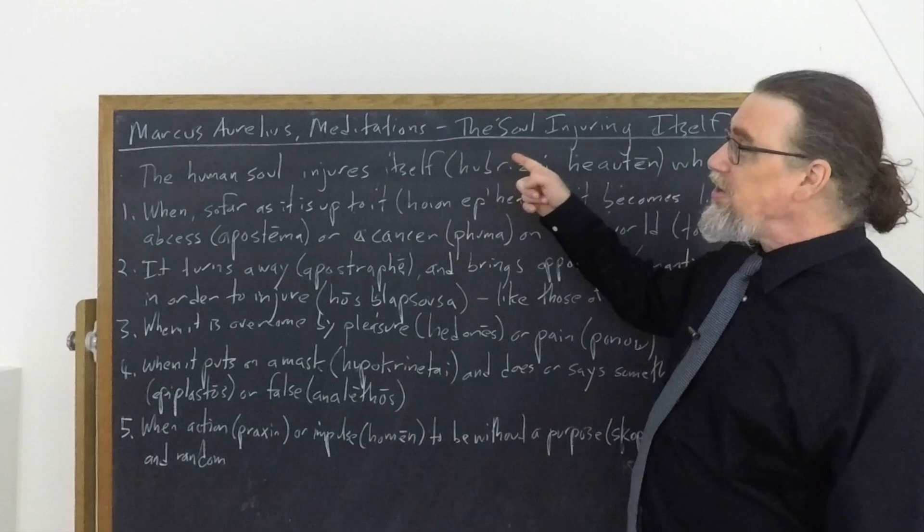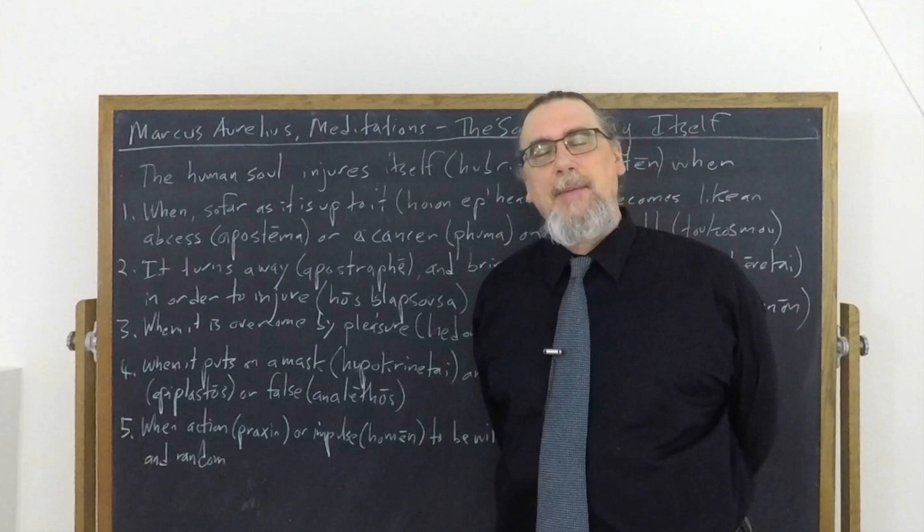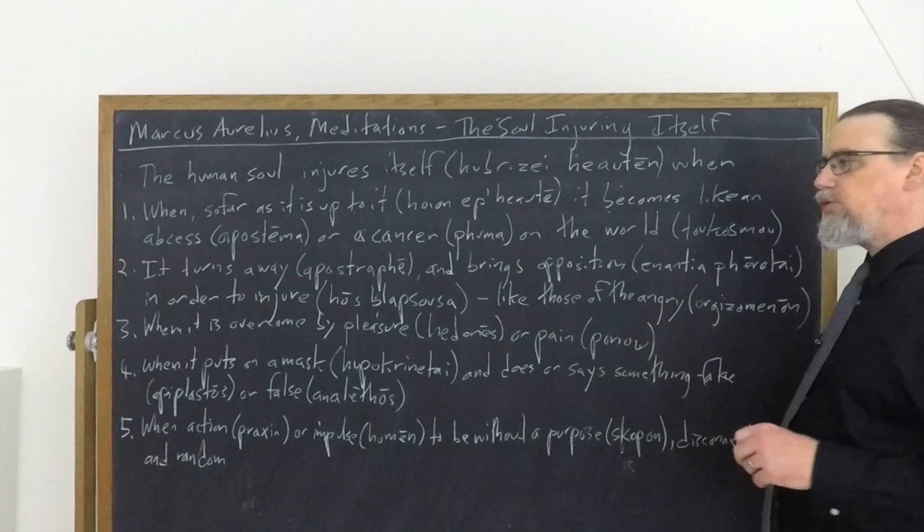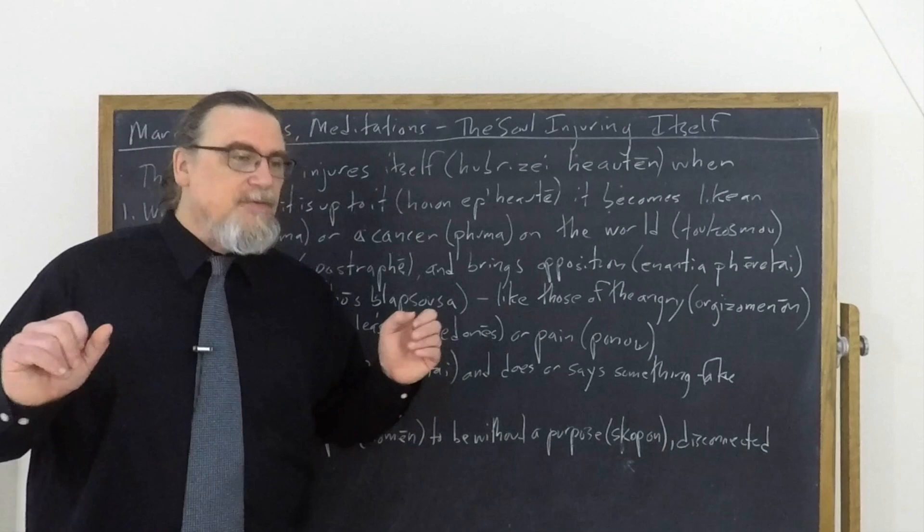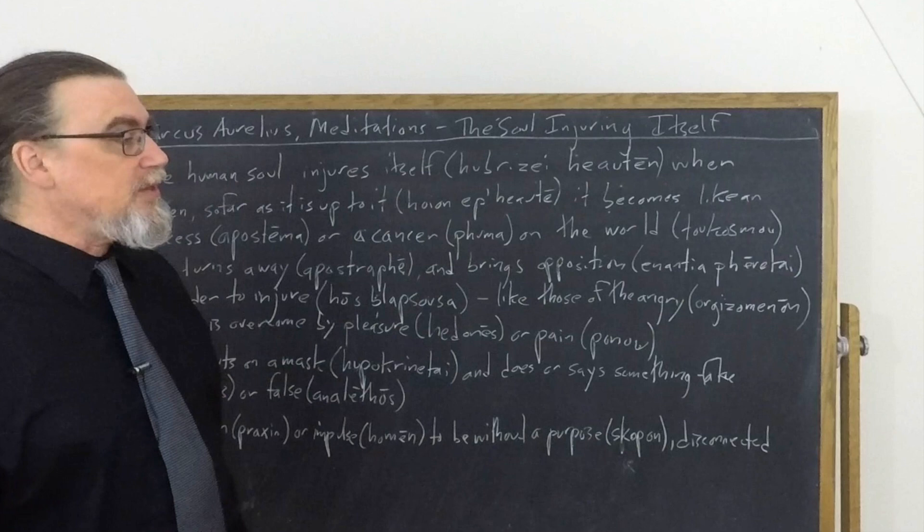The third one is relatively short: when it's overcome by pleasure or by pain. But I think it is kind of interesting to note here. So pleasure, being overcome by hedone or pain, ponos, in this case, ponu, because it's in the dative. So pleasure, hedone, that's very straightforward. There's a lot of opportunities for us to see something pleasant, know that we shouldn't pursue it, we shouldn't take it, we shouldn't prioritize it, but we do anyway. And that means we're overcome with it. And this could be everything from an illicit affair to having a midnight snack when we're not supposed to have a midnight snack and everything in between.